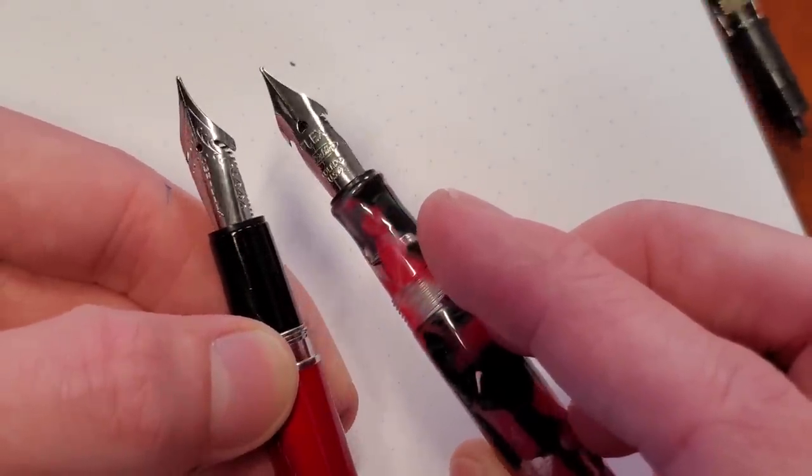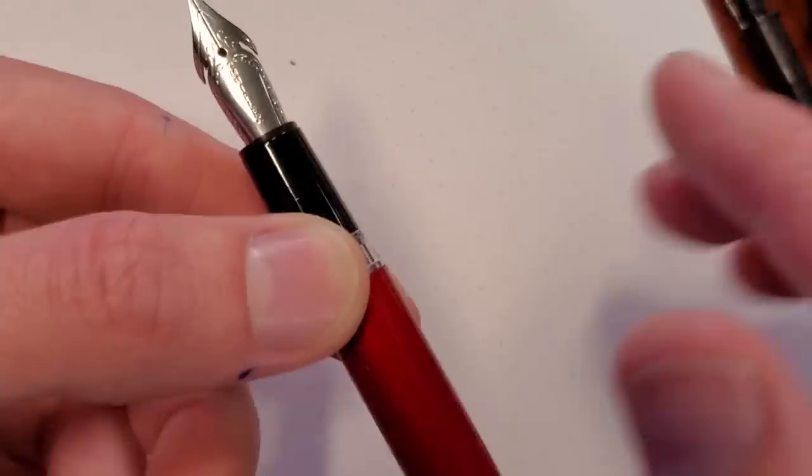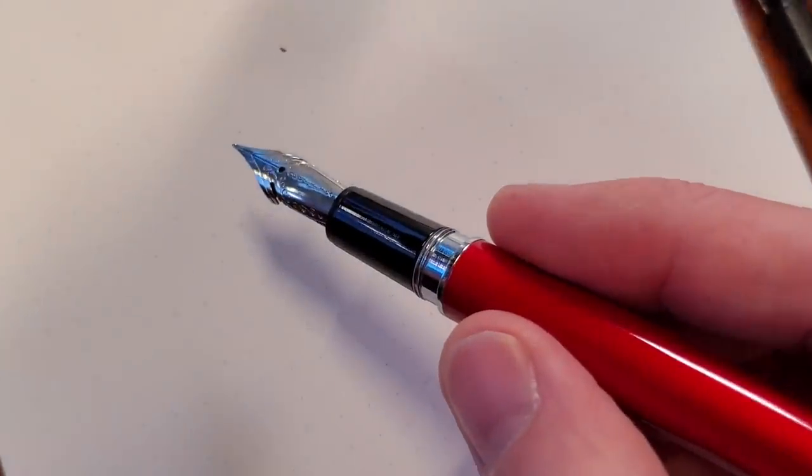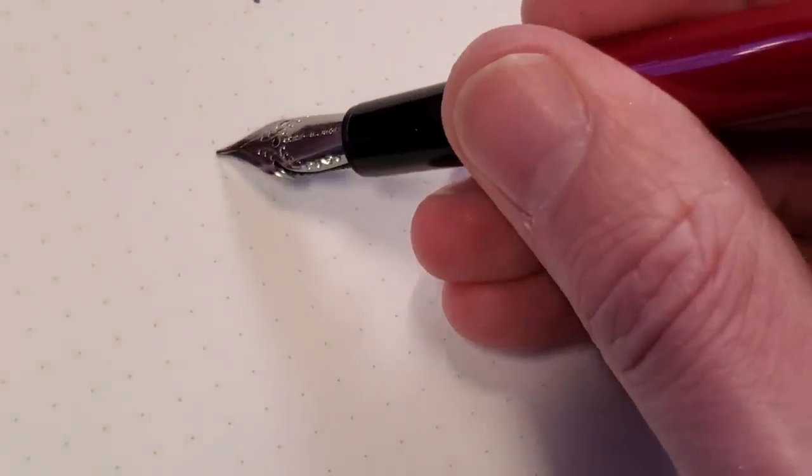You eliminate some material from the left and the right side of the nib, and then all of a sudden it's less stiff. Now it is still a steel nib, so it's not super bouncy like gold would be. But because of those cuts there, you are going to get a little bit of springiness. See?